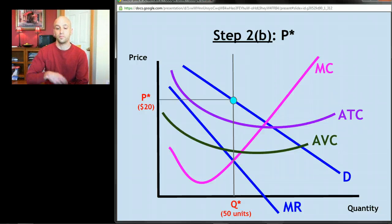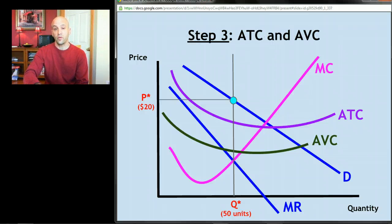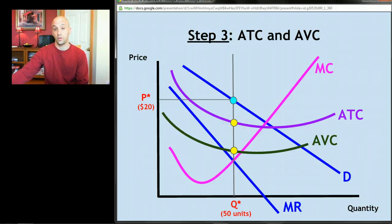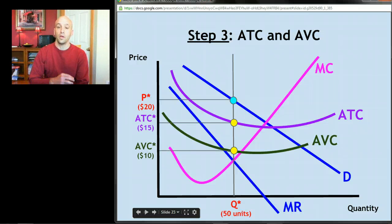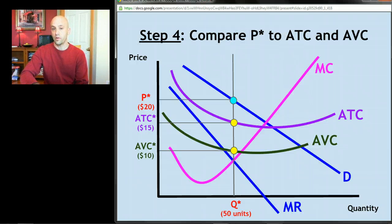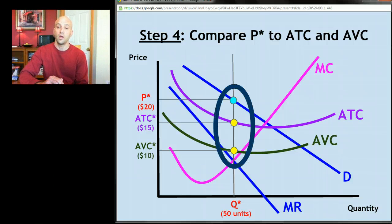Step three: we use our reference line to find average total cost and average variable cost at the profit-maximizing quantity. We make dots both on ATC and AVC at that quantity. Average variable cost crosses that line at one point and average total cost crosses it at another — that's where we put our two dots. Let's say average total cost is fifteen dollars and average variable cost is ten dollars. Step four: compare the price P-star to both average total cost and average variable cost, looking at where price falls relative to ATC and AVC.